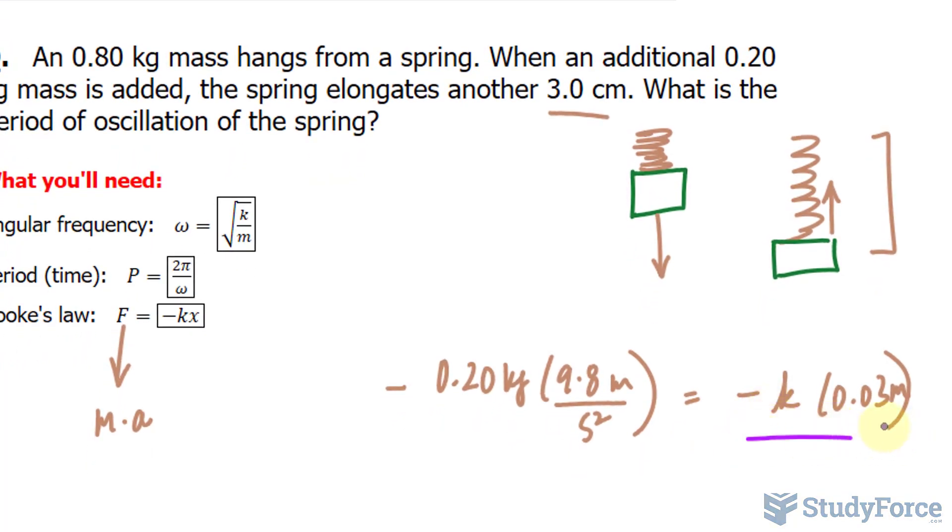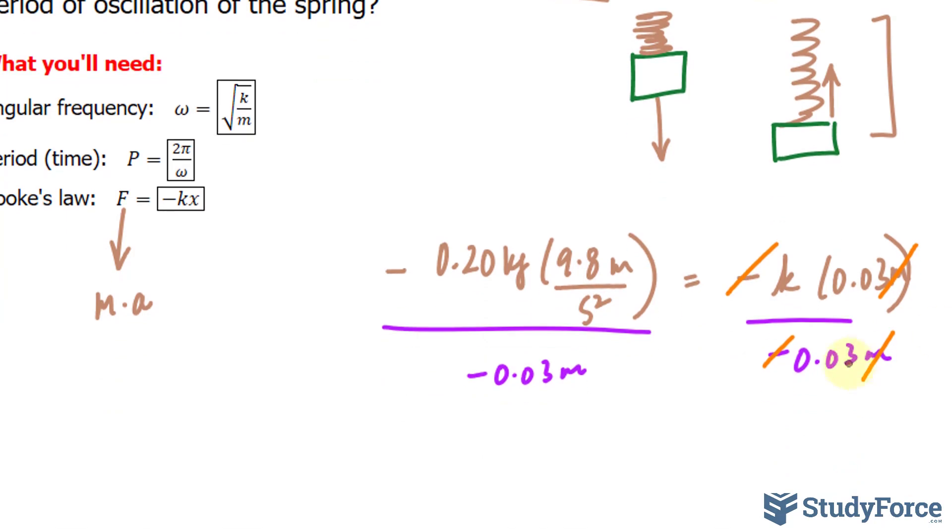Okay, now we will divide both sides by negative 0.03 meters. And what this will do is it will cancel out this negative and that negative, this unit with that unit, and this number with that number. This will cancel out with that, and let's go ahead and use our calculator.